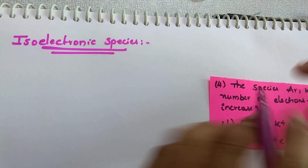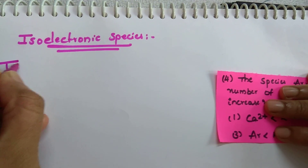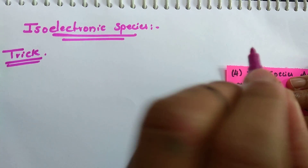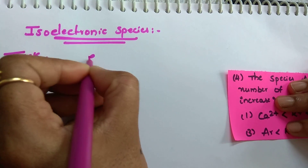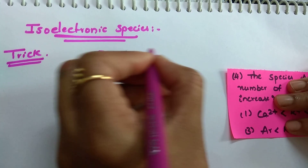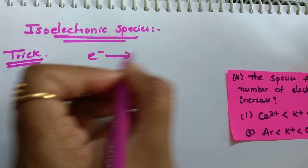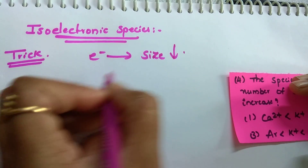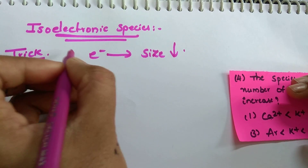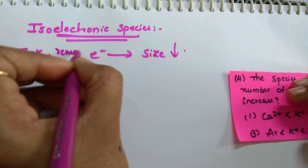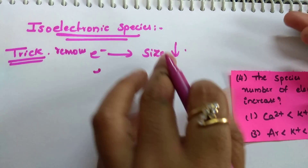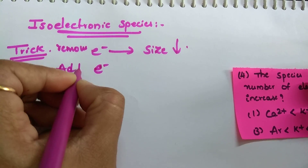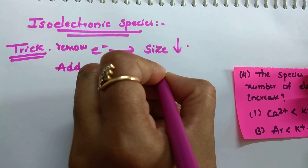I will tell you a small trick to solve this question. When you remove an electron, size decreases. The more electrons you remove, the more the decrease in size. When you add an electron, size increases. Simple concept.